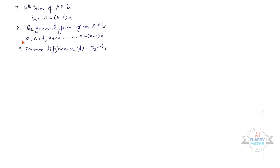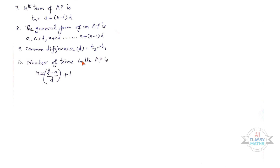The common difference d = t₂ − t₁, that is the second term minus the first term from the given sequence. Tenth point: The number of terms in the AP is n = (l − a)/d + 1.